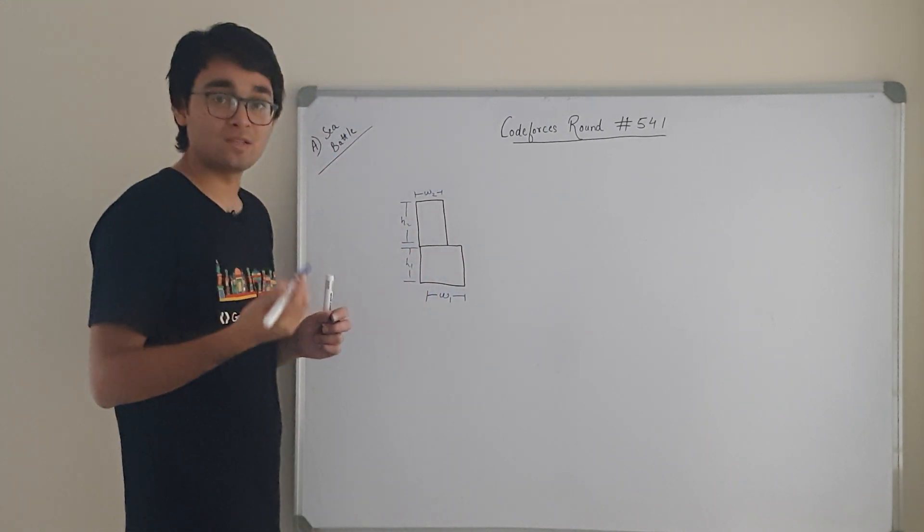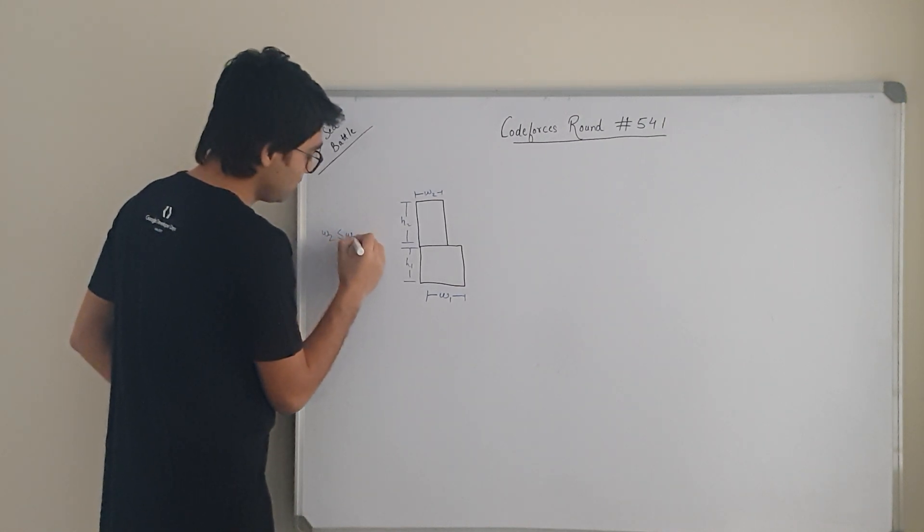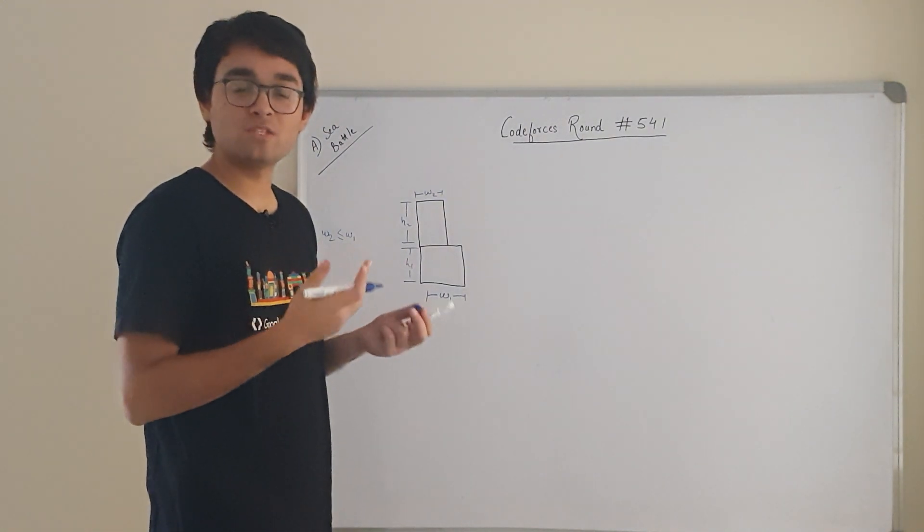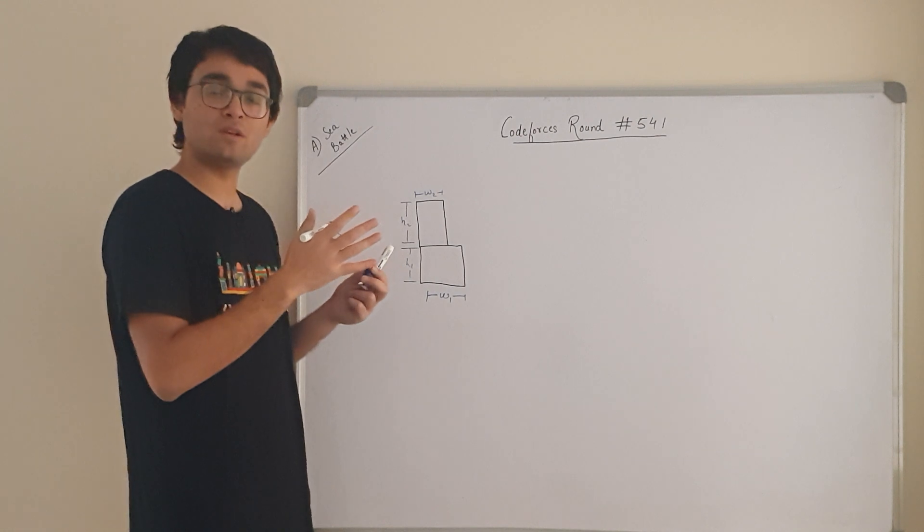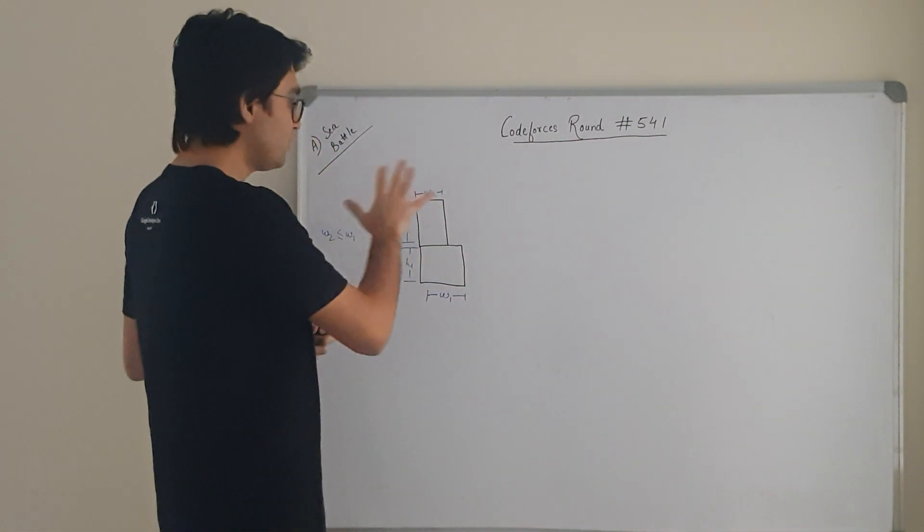What we are also given is that W2 is always less than or equal to W1. That means the width of the second box which is placed on top of the first box is always going to be less than or equal to the width of the first box. This is what we are given.